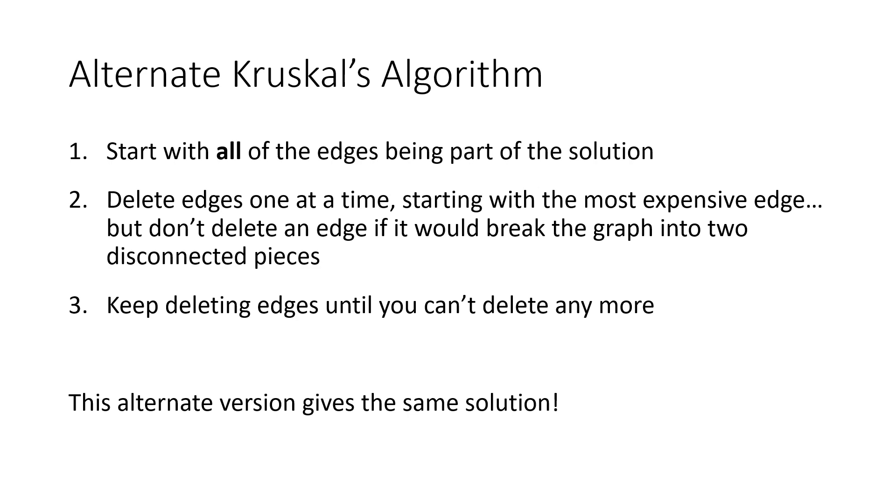There's another way to think about Kruskal's algorithm. If you've seen this algorithm before or in another context, you might've seen it this way, which is basically just the opposite. We start with all of the edges being part of our solution. And instead of starting to add the lowest cost edge, we start by deleting the most expensive edges. So we delete edges one at a time, starting with that most expensive edge, but we don't delete an edge if it would break the graph into two disconnected pieces. And we keep deleting edges until you can't delete any more. And this alternate version—it's a different way to think about it, but it's just kind of like the reverse—this alternate Kruskal's algorithm actually also gives the exact same solution.